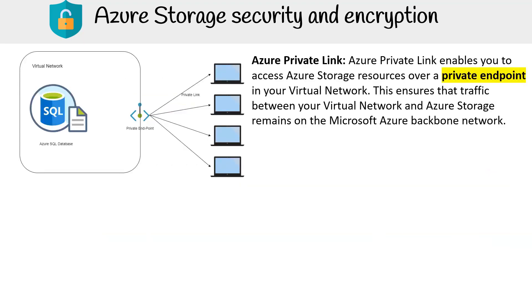Azure Private Link enables you to access Azure Storage resources over a private endpoint in your virtual network. This ensures that traffic between your virtual network and Azure Storage remains on the Microsoft Azure Backbone network.